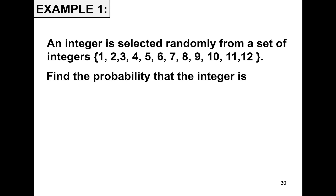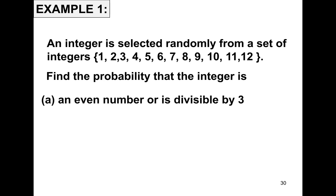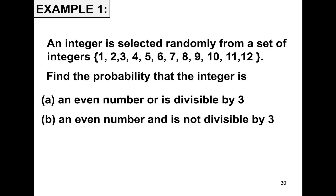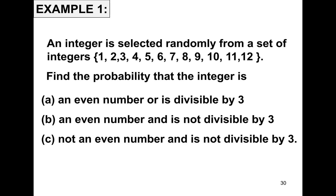For example number one, we have a set of integers 1 through 12. Find: (a) the probability that the integer is an even number or divisible by 3; (b) the probability that the integer is an even number and not divisible by 3; and (c) the probability that the integer is not an even number and not divisible by 3.